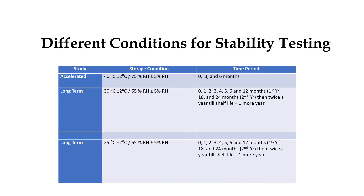For stability studies we have to keep samples of different batches at different conditions. For accelerated studies we have to keep samples at 40 degrees centigrade and 75 percent relative humidity, and the testing interval is initial, after three months, and after six months.